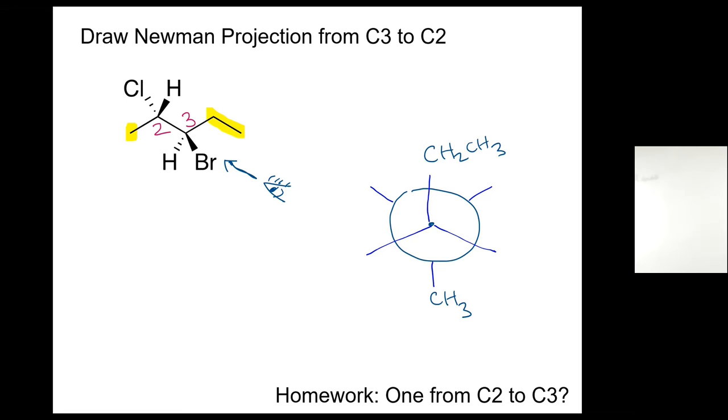But we still have to place the bromine and hydrogen on the front carbon. So we got two positions. Place the two. Bromine here or the bromine there. Still have a 50-50 chance. So that is where you're going to have trouble unless you practice it. Which one is going to be bromine? That one or this one?